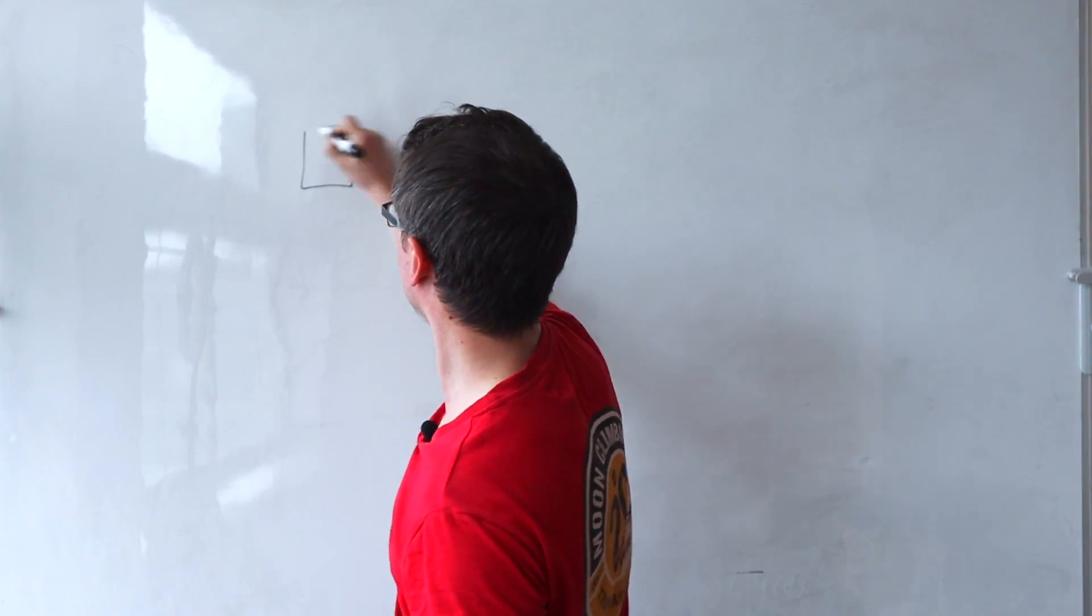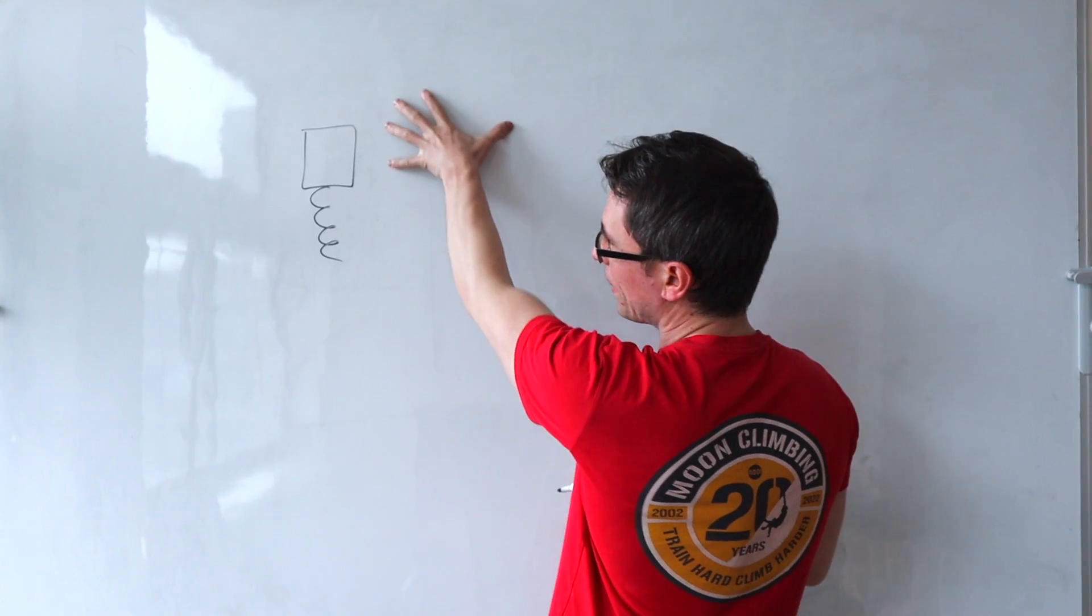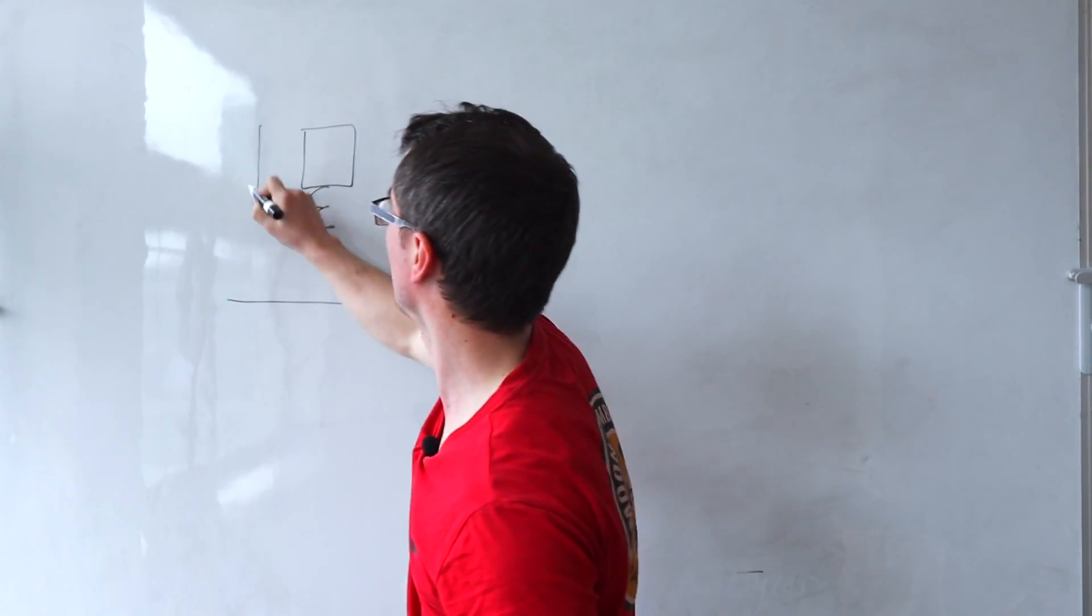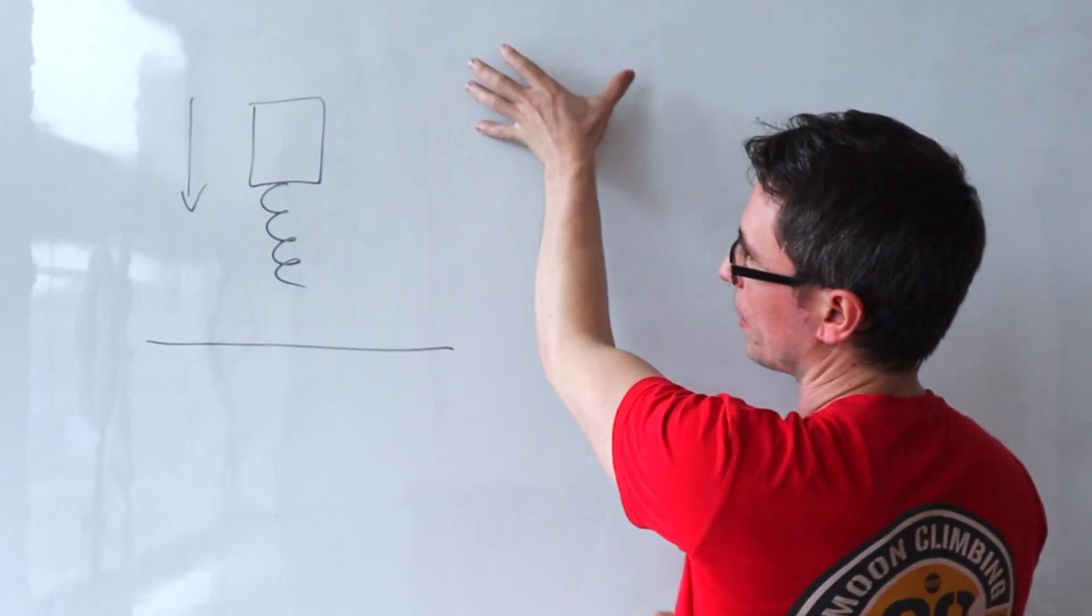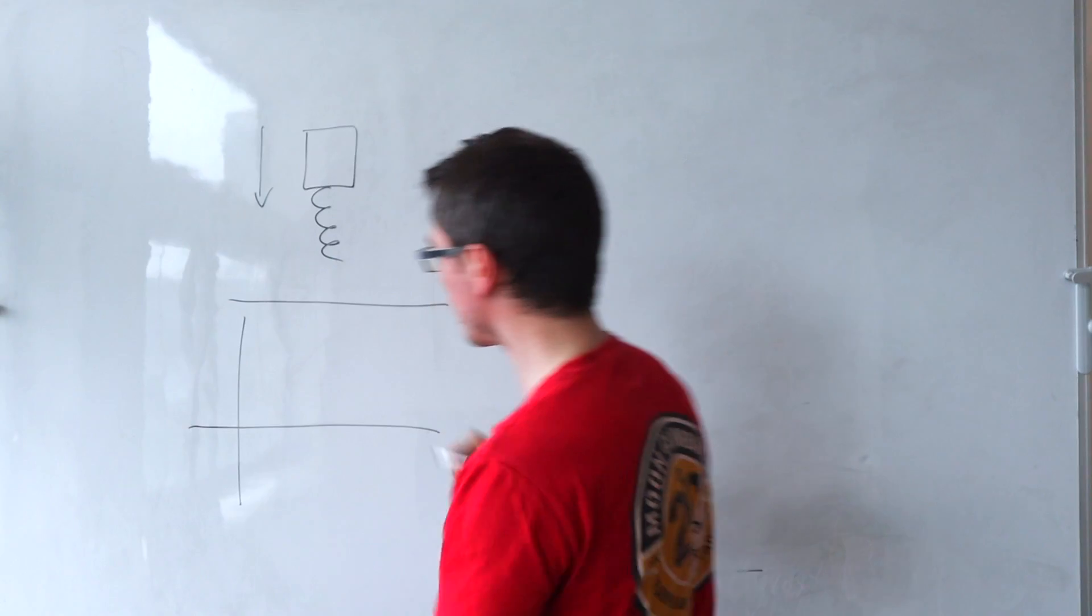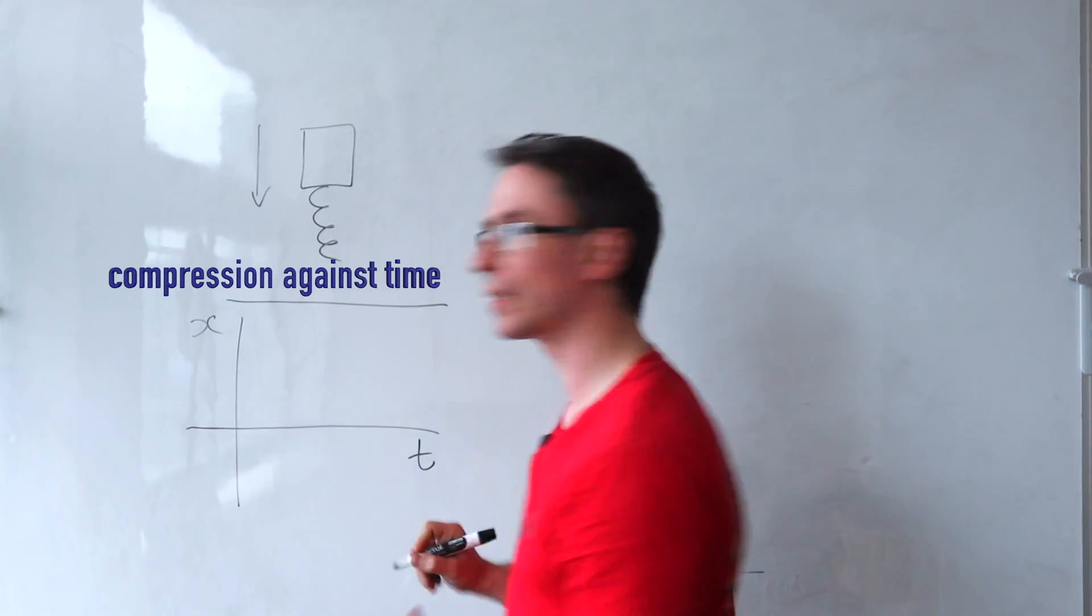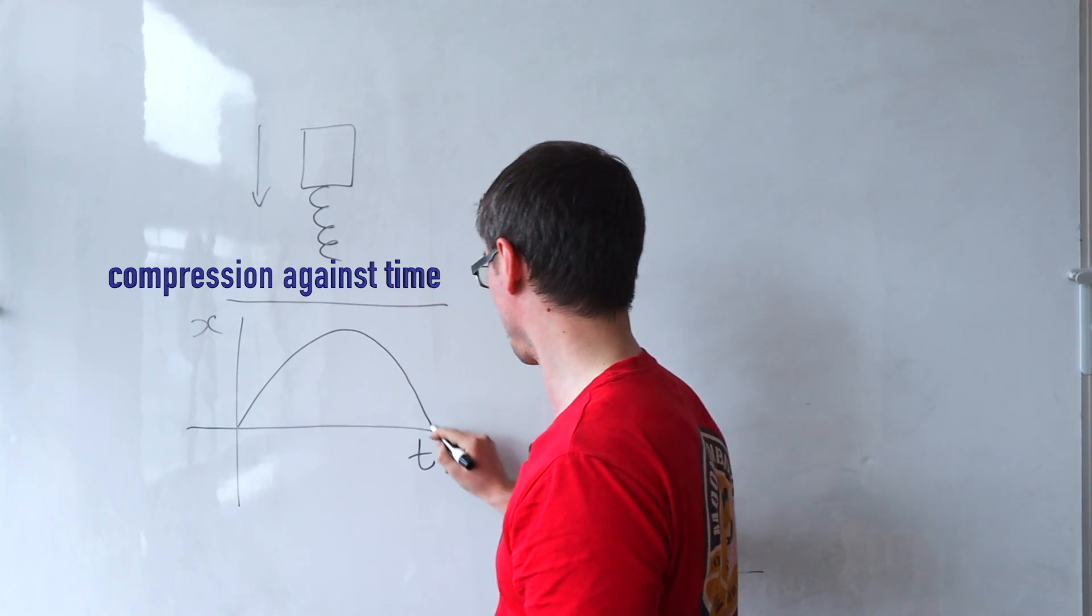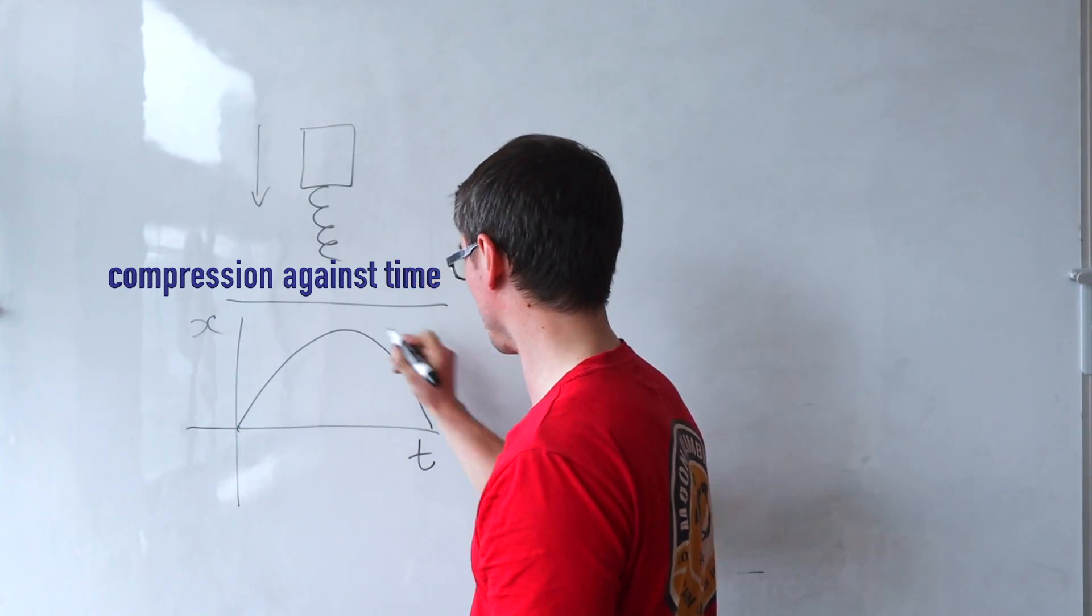Imagine that I have a block connected to a spring and this system is falling to the ground. It compresses as it hits the ground and then goes back up. We're also given a graph of the compression x against time t. Let's say that the graph looks something like this. Let's give it some numbers just as it would on a real question.